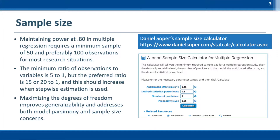The general rule is to have a ratio of observations to independent variables of at least 5 to 1. Table 4.5 in the textbook indicates the minimum R-square that can be found statistically significant, with a test power of 0.8, a significance level of 0.01 or 0.05, with different numbers of independent variables and sample size.